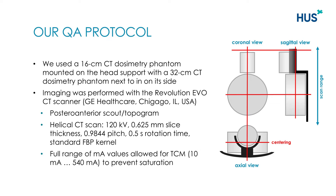Then we acquired a posterior-anterior scout image and scanned helically using these parameters. The scan parameters don't have to be as listed here. The most important part is to keep them constant in consecutive scans and to allow a full range of tube current values used in the modulation.